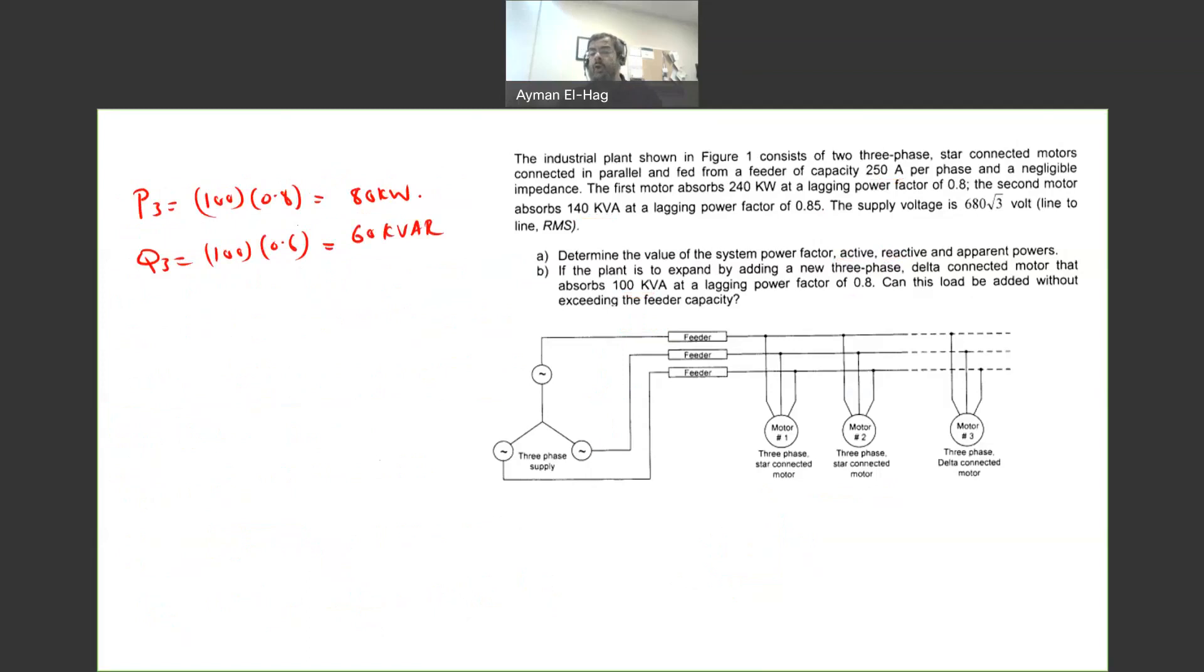Now we want to see what is the total P, Q, and S for this load. So my P total will equal to my P3 plus P of the system, and when you add this, we'll get 439 kilowatt.